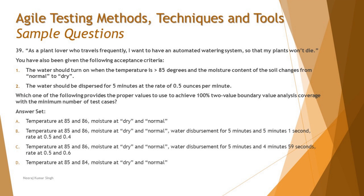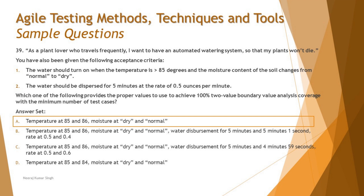Option D says temperature at 85 and 84, and moisture at dry and normal. Both 85 and 84 fall under the invalid range — neither covers the valid boundary of 86 or above. So option D is incorrect. The right answer is A: temperature at 85 (invalid) and 86 (valid), and moisture at dry (valid) and normal (invalid).